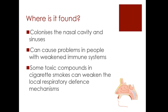Streptococcus pneumoniae normally colonizes the nasal cavity and the sinuses and normally causes no problems, but it can cause problems in people with a weakened immune response. This includes infants, the elderly, those with HIV infections, diabetes, malignancy, or alcohol abuse. Certain toxic compounds in cigarette smoke can also weaken local respiratory defense mechanisms, making these patients more susceptible to Streptococcus pneumoniae infections.